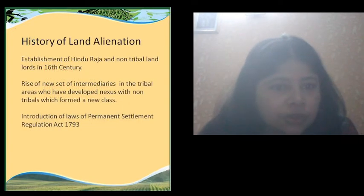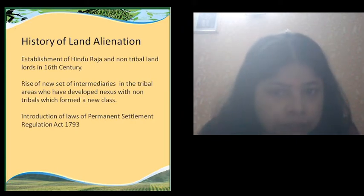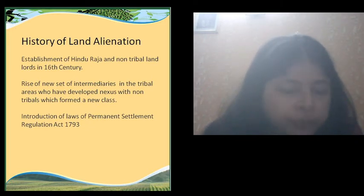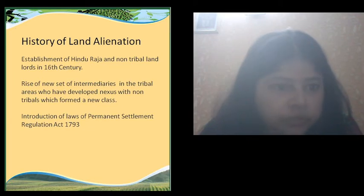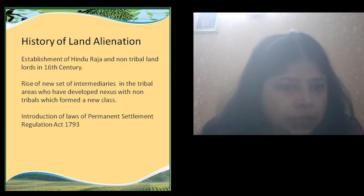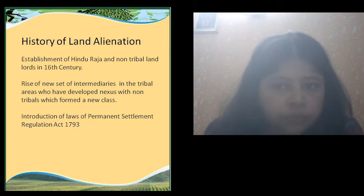If we look into the history of land alienation, we find that establishment of Hindu Raja — a non-tribal landlord in the 16th century — and the rise of a new set of intermediaries in the tribal areas who developed a nexus with non-tribals, forming a new class. Then, introduction of the Permanent Settlement Regulation Act 1793 is another factor which relates to the history of land alienation.